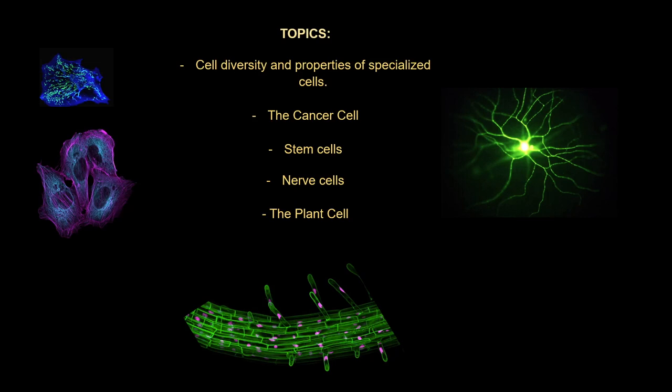Cellular diversity will be discussed including prokaryotes, selected specialized eukaryotic cells and their functions including plant cells. How stem cells differentiate to form highly specialized cells such as nerve cells? Have you ever wondered what transforms a normal cell into a cancer cell? If so, this course is for you. We will discuss how cellular controls go wrong to produce a cancer cell.